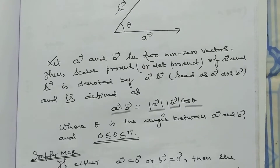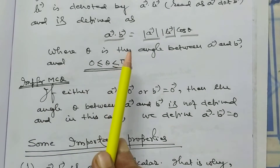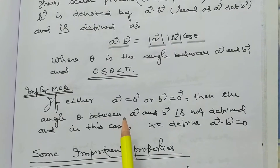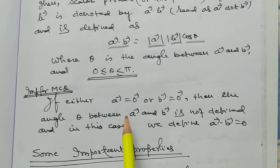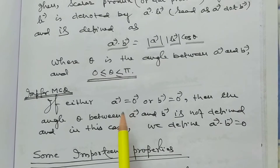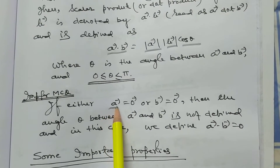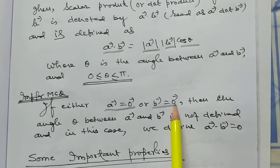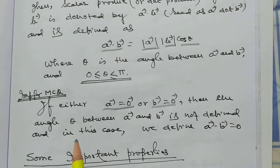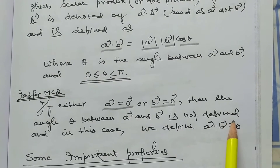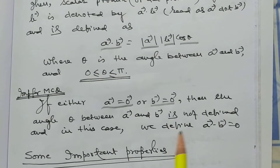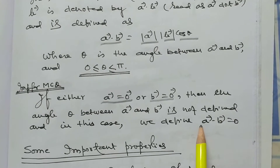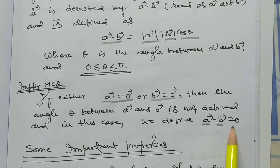This relation is very important for MCQ type questions. If either vector A is equal to zero or vector B is equal to zero, then the angle theta between A and B is not defined. In this case, we define vector A dot vector B is equal to zero.